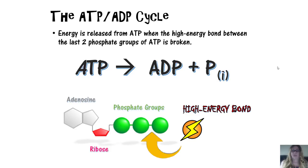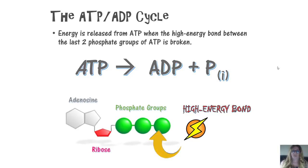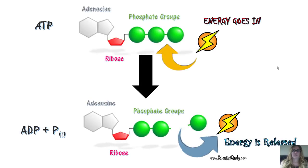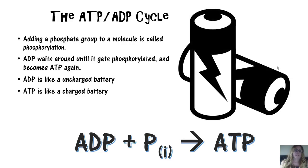The bond that links the second and third phosphate groups together holds a lot of potential energy — it is a high-energy bond. When energy is needed, this bond is broken and energy is released, converting ATP to ADP and inorganic phosphate. The ATP-ADP cycle: the molecule switches back and forth between ADP and ATP. Adding a phosphate group to a molecule is always called phosphorylation. ADP is like an uncharged battery; ATP is like a charged battery.